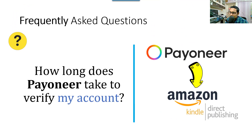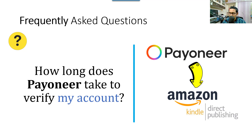Next question: how long does Payoneer take to verify your account? Approval can take up to a week as more information may be needed and supporting documents need to be verified. It may take longer if there are discrepancies or mismatches in your documents. Specifically for ID card verification, it takes one to three business days. Once verified, the approval team will email you, and you can also check status in the Verification section of your account.